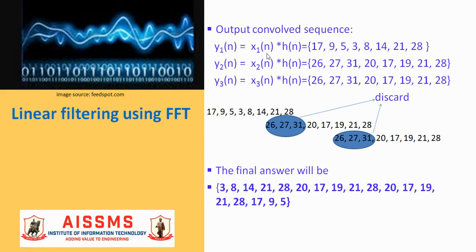Then we need to convolve each of the subsequence with the impulse response, and the result obtained for y1(n) is 17, 9, 5, 3, 8, 14, 21, 28. While for y2(n) and y3(n), the output convolve sequences remain identical as x2(n) was equal to x3(n).